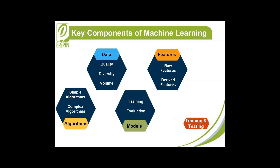5. Training and testing form the life cycle of a machine learning model and include two crucial phases. Training: the model is exposed to a subset of the dataset to learn patterns and relationships. Testing: the model's accuracy and generalizability are evaluated using a separate dataset that it hasn't encountered during training.